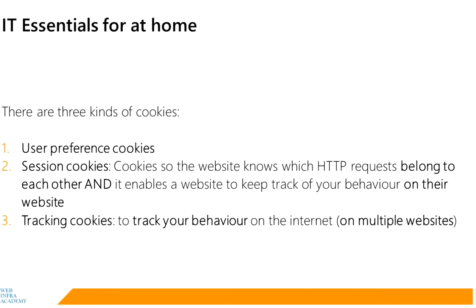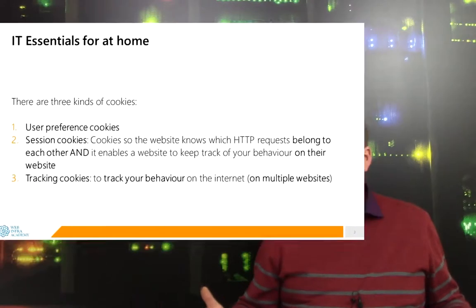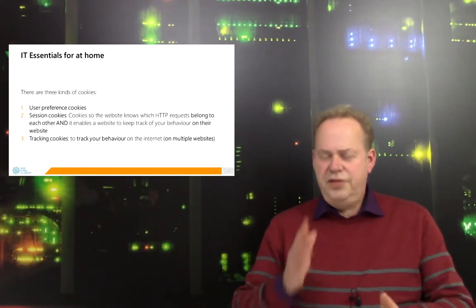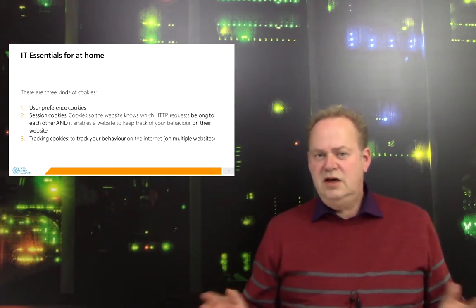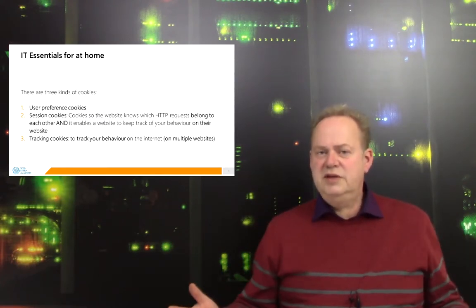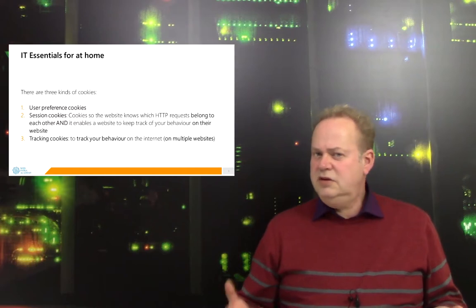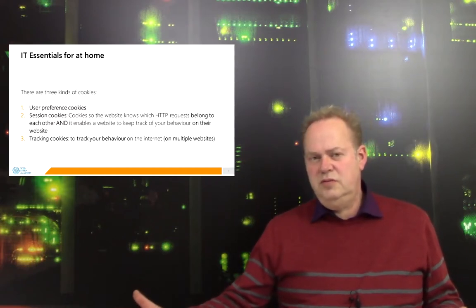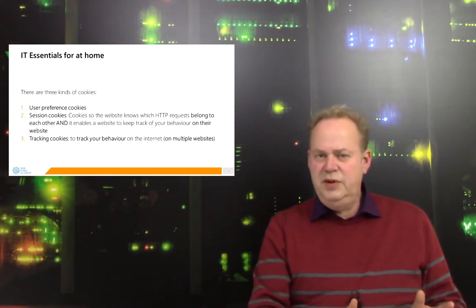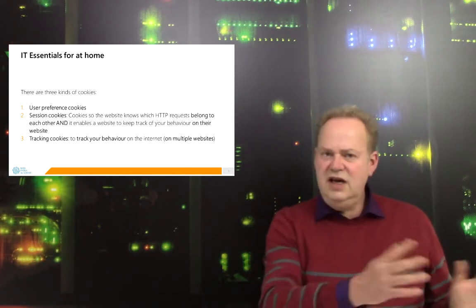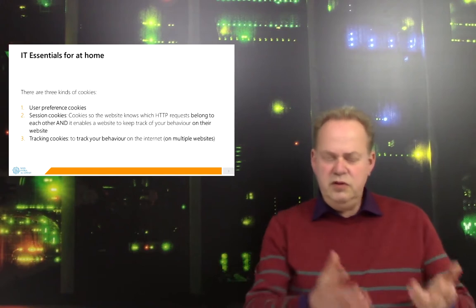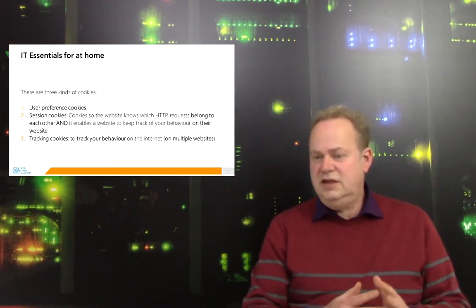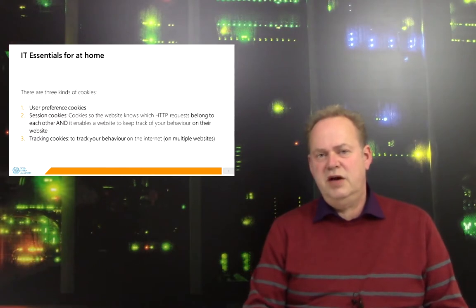The second cookie is to see which HTTP requests belong to each other. You have to realize that a website like amazon.com gets thousands of HTTP requests per second. Hundreds of users are using the website at the same time. How does the computer from amazon.com know which HTTP requests are yours and which HTTP requests are from another user? Also realize that on just one website, a lot of HTTP requests are generated by your browser.